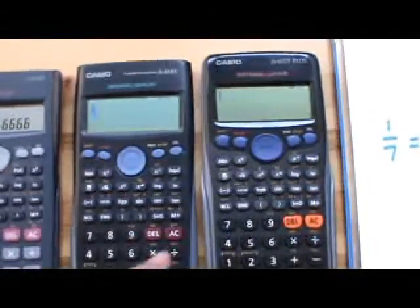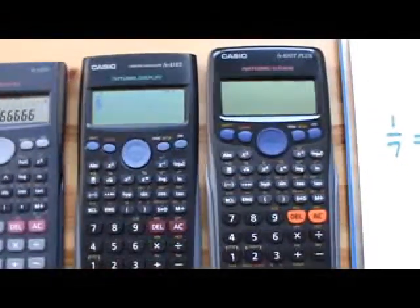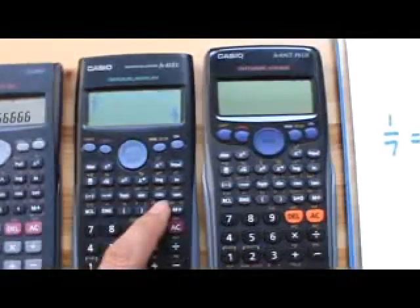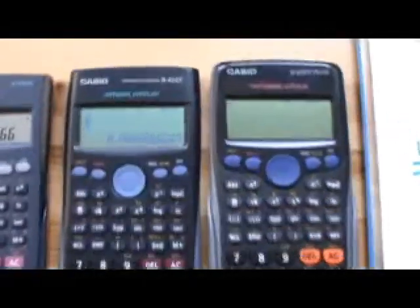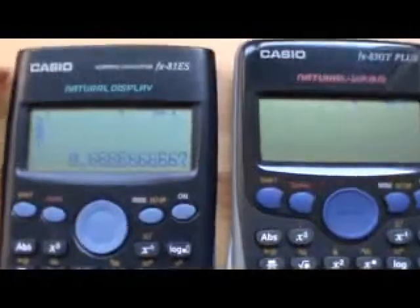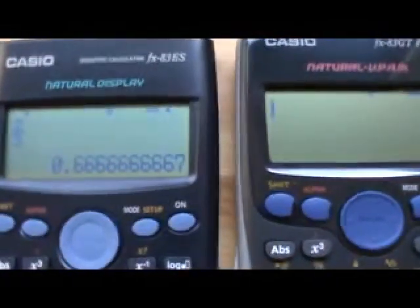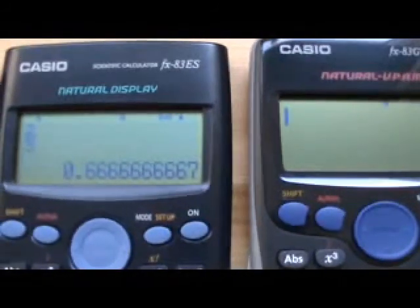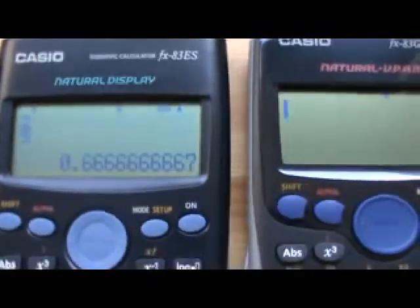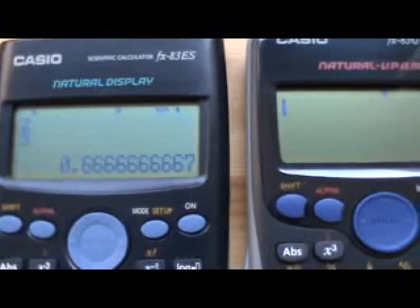If we press now the SD button, sorry, press equals, press the SD button, that will tell us the answer, which is slightly different from the first calculator. It's got a seven on the end. So it's rounded it to those 10 figures.